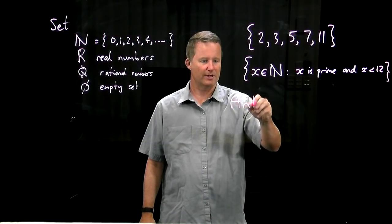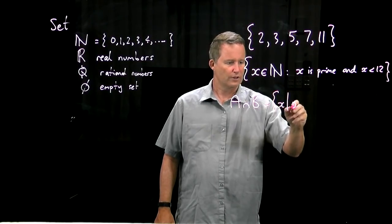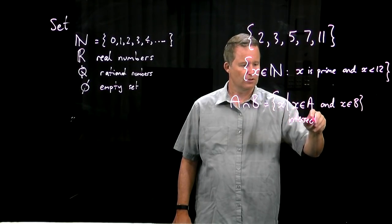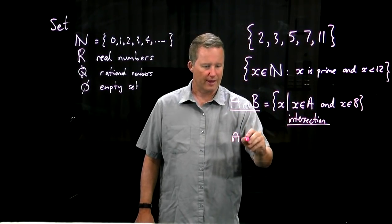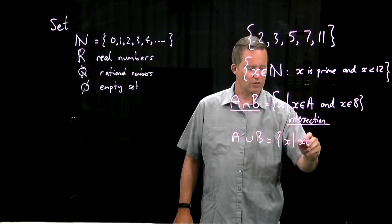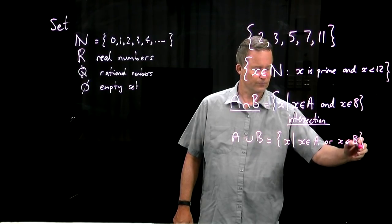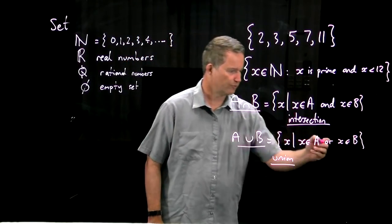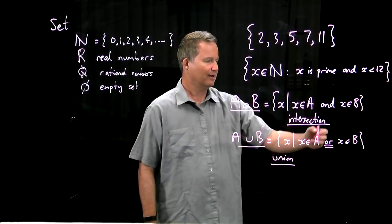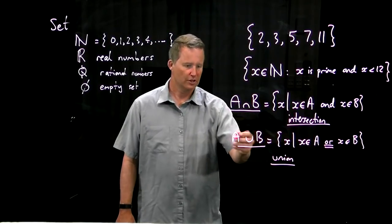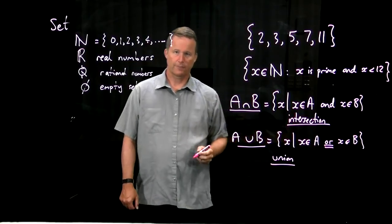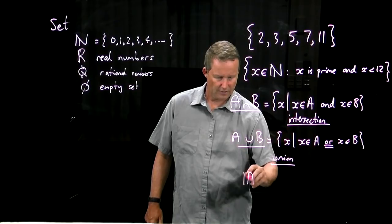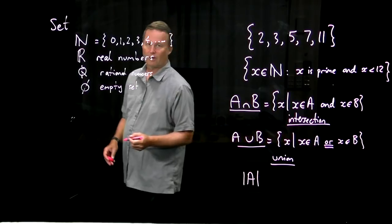If you have sets A and B, then the set of all things which belong to A and to B is called the intersection, written like that. On the other hand, the set of all things that belong to A or B is called the union. Remember that this or is not exclusive - it's okay for something to belong to A and B. The union always contains the intersection. The number of elements in a finite set I'm going to write like that. It's called the cardinality or the size of the set.